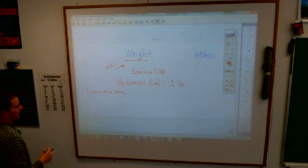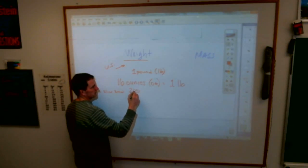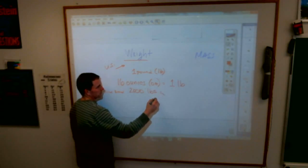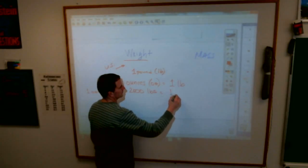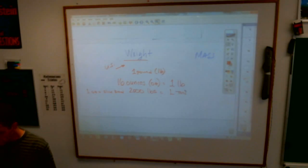And then the other one we have is somebody, 2,000 pounds equals what? There. One ton.